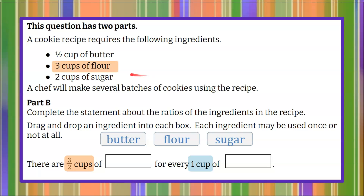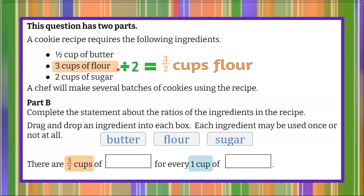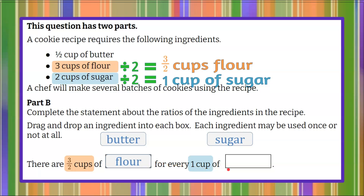So let's go back and look at the next ingredient: three cups of flour. If I divide three by two, that becomes a fraction — three divided by two cups of flour, which is one and a half cups, or three halves. Dividing by two is finding a half, so I have three halves cups of flour. Now what else can I divide by two to get one cup? If I take two cups of sugar and divide by two, I get one cup of sugar. So three halves cups of flour for every one cup of sugar.